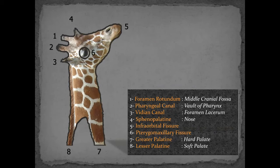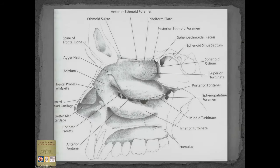The different openings of the pterygopalatine fossa — if the giraffe sticks its tongue out it represents the infraorbital nerve. Anteriorly: the infraorbital fissure. Posteriorly: Vidian, rotundum, and pharyngeal canal. Medially (number four): sphenopalatine foramen. Laterally (six): pterygomaxillary fissure. Inferiorly (seven, eight): greater and lesser palatine foramina. Looking medially at bony anatomy: the sphenopalatine foramen with posteriorly the sphenoid crest of the palatine bone, anteriorly the orbital crest, and in between the sphenopalatine foramen.